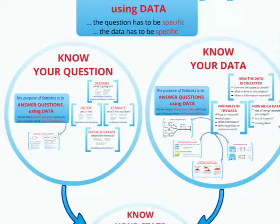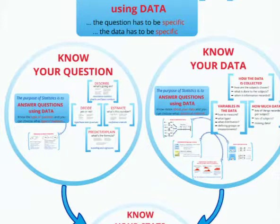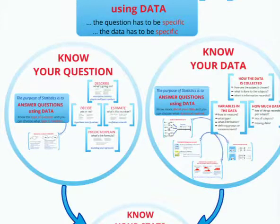What type of variable you have, what distribution it comes from, and whether it's defining groups or measurements all matter. This Prezi has basically all the information you need to make a decision about what stats goes with what, and it's why all that content is in your stats course — things about random variables, probability, categorical versus quantitative, and normal distributions. It's all there because it goes into the decision of what stats goes with what.